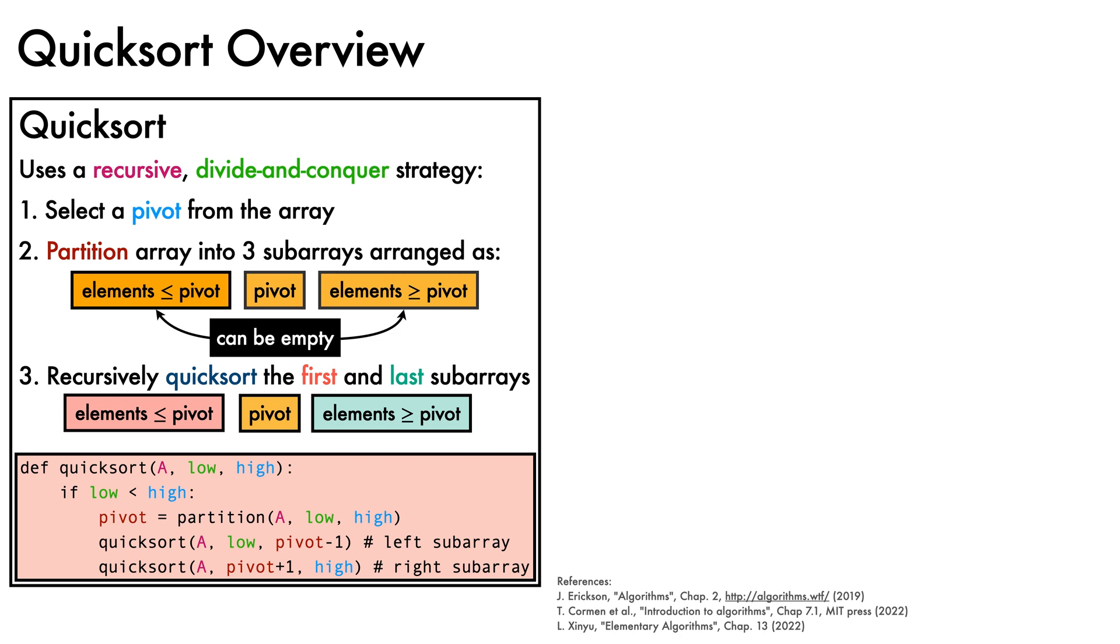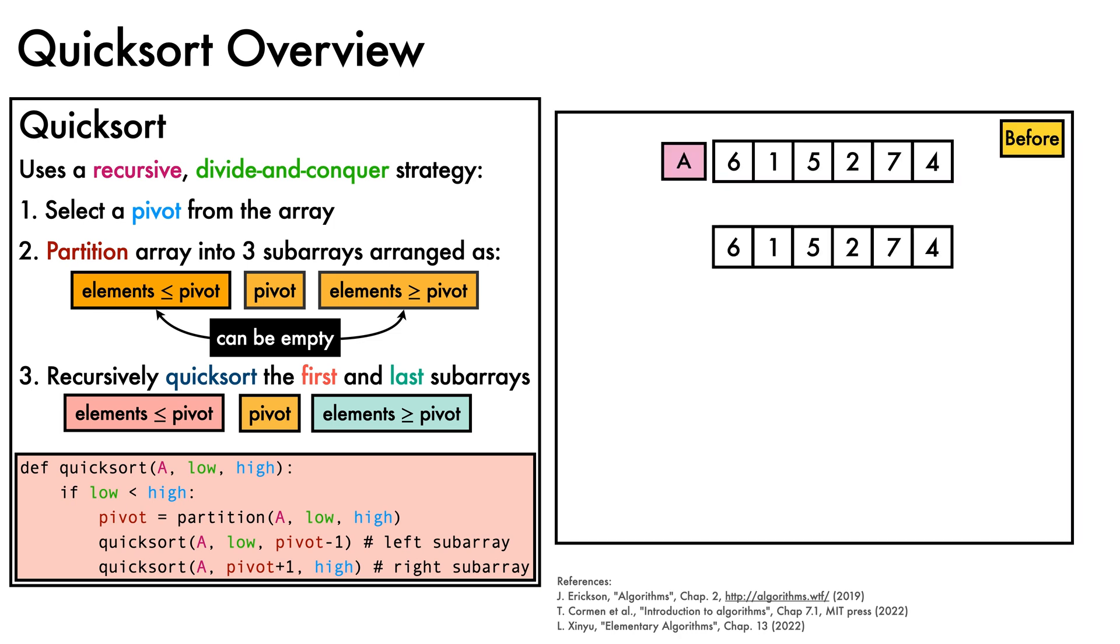Let's see Quicksort in action on this example array, which we duplicate for clarity. We call Quicksort with low equal to index 0 and high equal to index 5, so that they span the array we'd like to sort. Our helper function first checks if low is below high, which it is, so we call the partition helper function. This selects an element to be the pivot. In this example, we'll always take the pivot to be the last element in the subarray. The partition function then does some heavy lifting to rearrange the elements into the three subarrays of step 2.